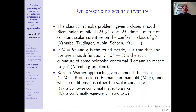I will recall some developments on the problem of prescribed scalar curvature. It all started with the classical Yamabe problem: given a closed Riemannian manifold, does this manifold admit a metric of constant scalar curvature in the conformal class of G? It started with Yamabe, and later was advanced by Trudinger, Aubin, Schoen, and Yau. Today, as stated, it is completely solved, and it is known that all compact manifolds admit such a metric.